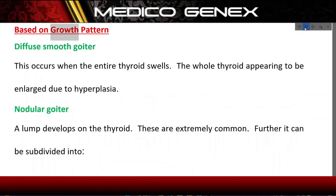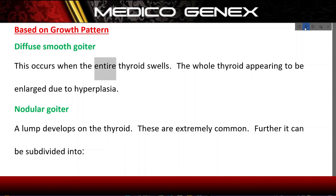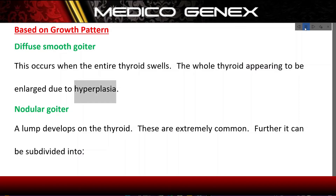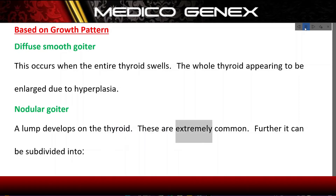Based on growth pattern. Diffuse smooth goiter: This occurs when the entire thyroid swells, with the whole thyroid appearing to be enlarged due to hyperplasia. Nodular goiter: A lump develops on the thyroid. These are extremely common.